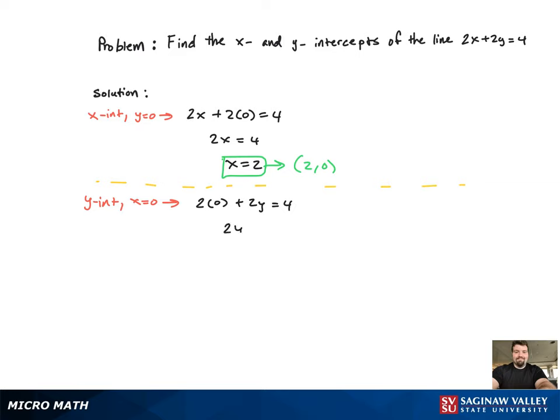And that gives us 2y equal to 4. Once again, y equals 2. That corresponds to the point (0, 2).